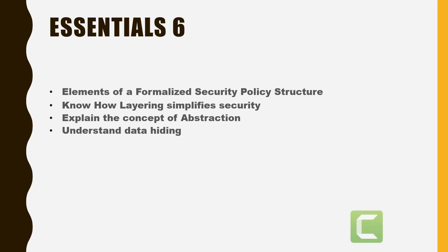Let's talk about elements of a formalized security policy structure. To create a comprehensive security plan, you need the following items in place: a security policy, standards, baseline, guidelines, and procedures. You need to know what each of these things are and be able to delineate them. Such documentation clearly states security requirements and creates due diligence on the part of the responsible parties.